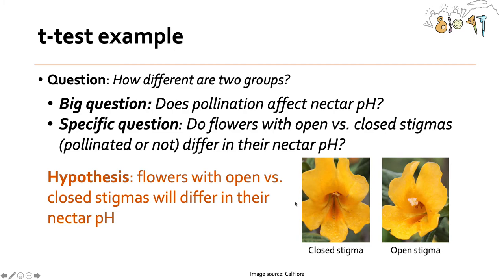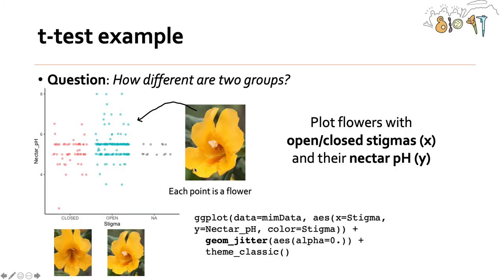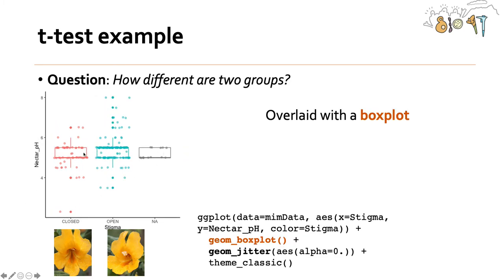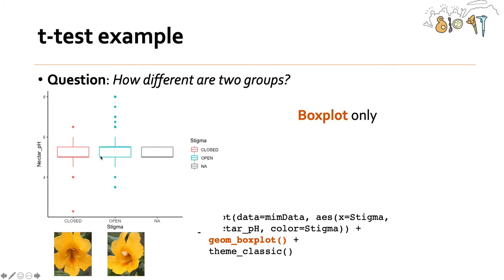We might develop a hypothesis that flowers with open versus closed stigmas will differ in their nectar pH. We can plot the raw data points for flowers with open and closed stigmas — for example, a flower with an open stigma that had a nectar pH of a little over six, and a flower with a closed stigma that had a similar nectar pH. We can overlay individual observations with a box plot. The code to generate that is included here.